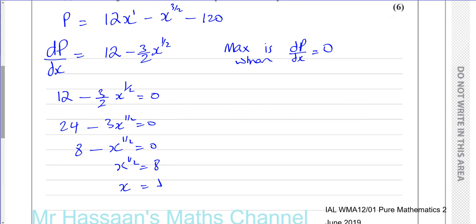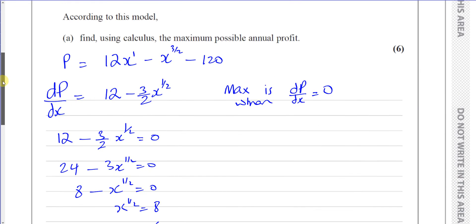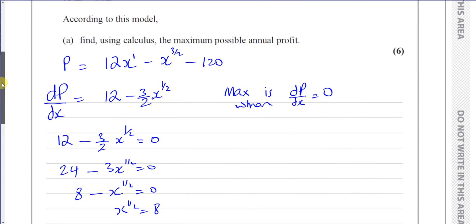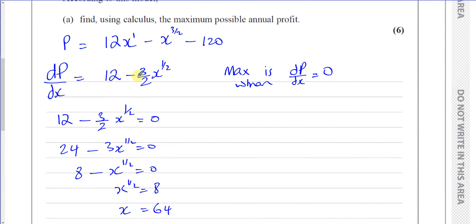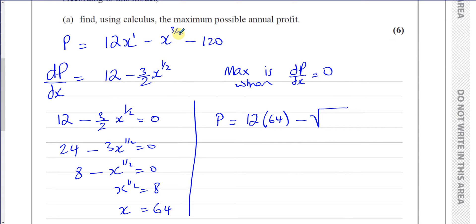X equals 64 is not the final answer — that's the price of the watch that gives maximum profit. The question asks for the maximum profit itself, so we substitute X equals 64 back into the original equation. The profit is 12 times 64 minus the square root of 64 cubed, minus 120.